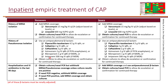With carbapenems — meropenem and imipenem — because they are very broad, you should only use them if the patient had a history of multidrug-resistant pseudomonas, meaning pseudomonas that was resistant to pip-tazo, cefepime, or ceftazidime. It is important to obtain cultures to allow de-escalation or confirmation for continued therapy. If you do not grow pseudomonas on the culture, you can de-escalate back to ceftriaxone. If you did grow pseudomonas, then you know you made the right decision and you will continue the anti-pseudomonal coverage.